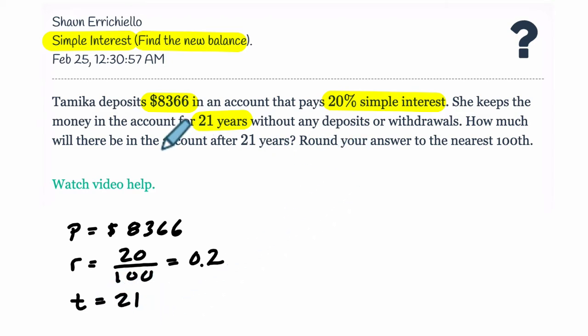Now, how much will there be in the account after 21 years? Well, we've got to find the interest I, and that's the principal times the rate times the time. That's going to give us our interest. Then, we have to add that to our original account to get the new total, to get what the new balance will be.